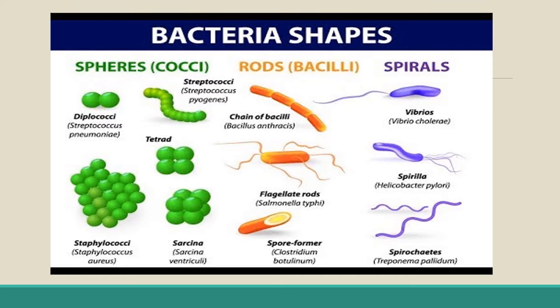The second subtype is rod-shaped bacteria, known as bacilli — singular bacillum. They are also found either singly or in a chain called streptobacilli. The third type is spiral bacteria, because they have a spiral shape. If there is a half-spiral it is called Vibrio, and a complete spiral is the spiral bacterium.